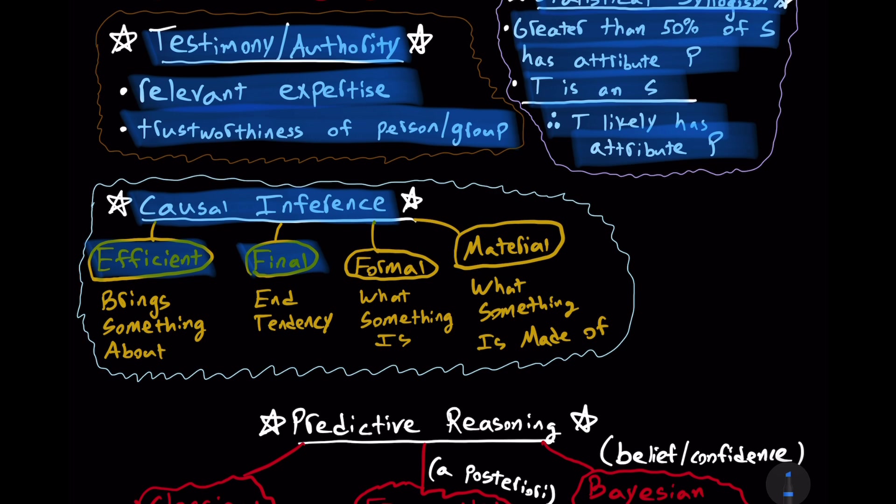Those are known as extrinsic causes. But you can also talk about formal and material causes which are intrinsic. The formal cause deals with what something is. What is it? The material cause deals with what something is made of or its composition. It's the raw materials which are determined by the form to be a certain kind of thing. So causal inference is another component to thinking about induction.